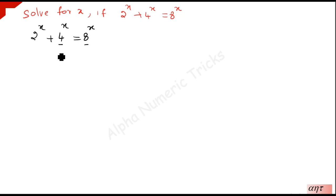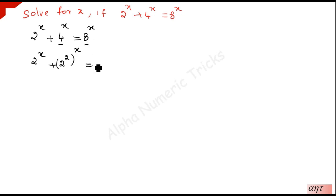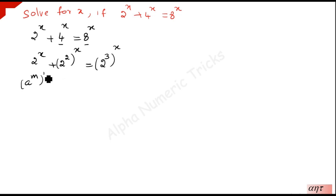If we write these two terms also in terms of 2, we can easily simplify. For that, we write 4 as 2 squared, whole to the power x, and 8 as 2 cubed, whole to the power x. We need to use the law: a to the power m, whole to the power n, can be written as a to the power n, whole to the power m — we can interchange the powers like this.